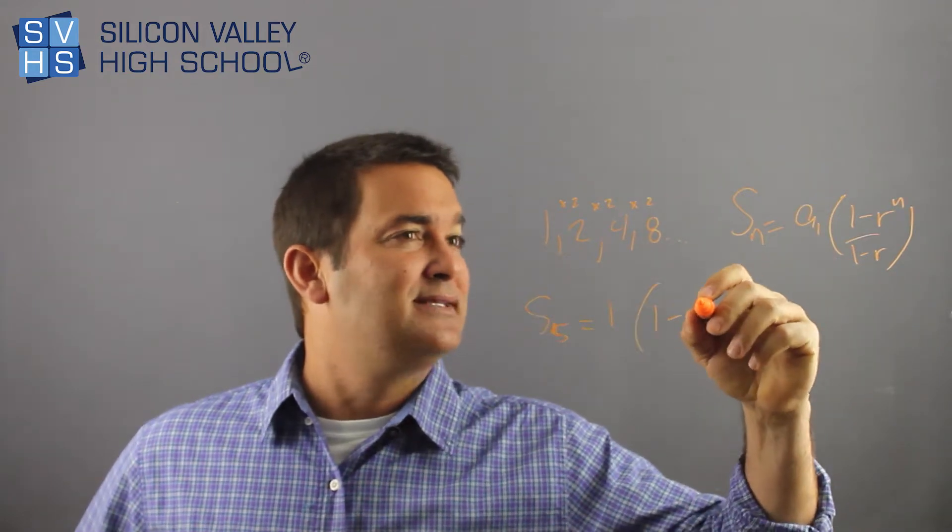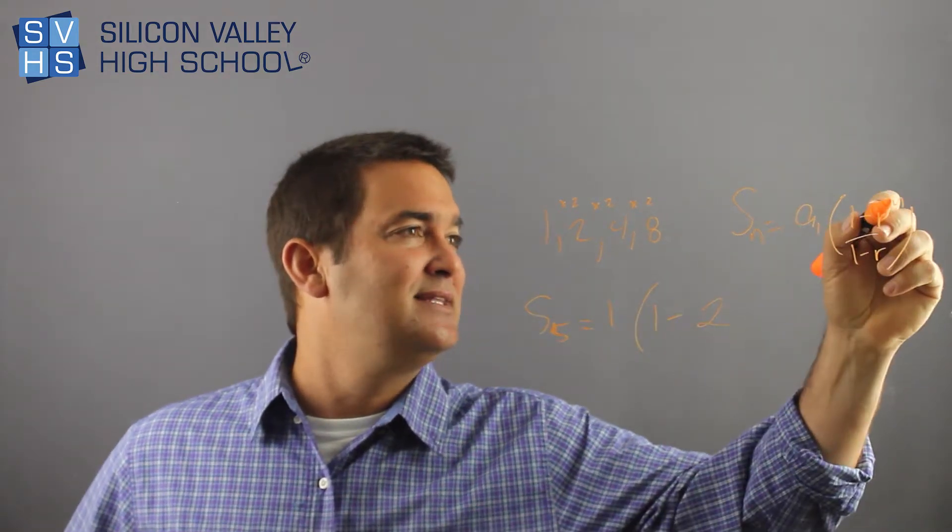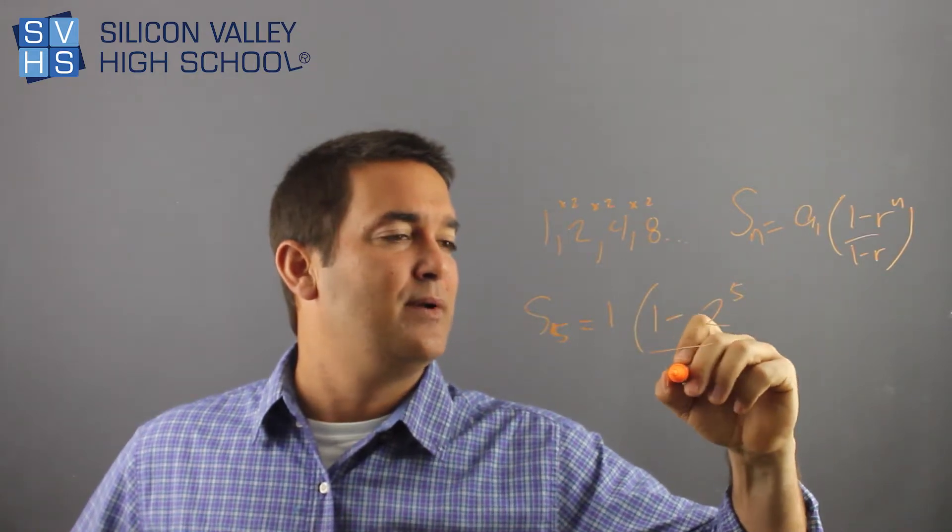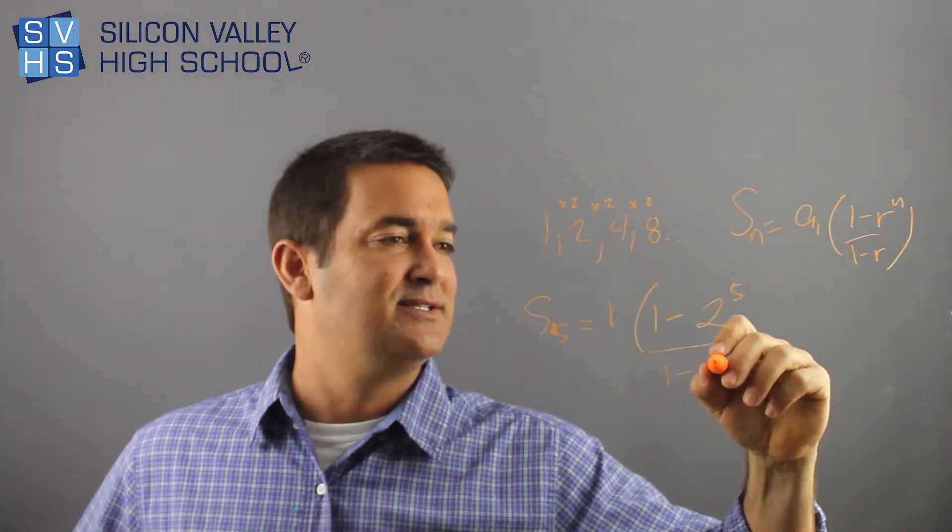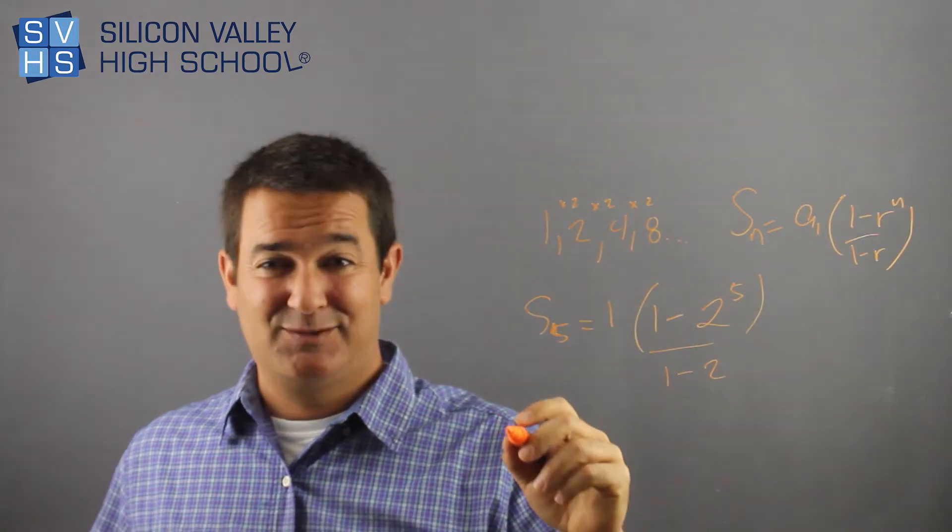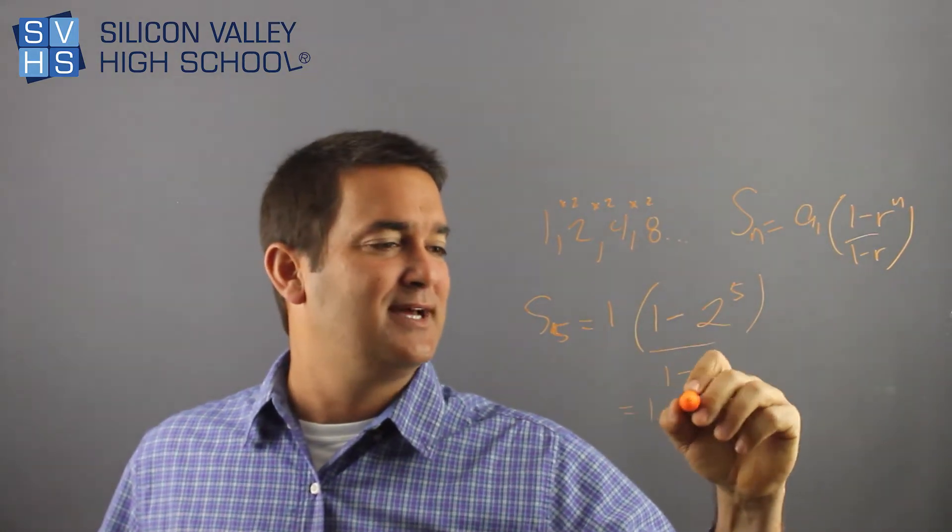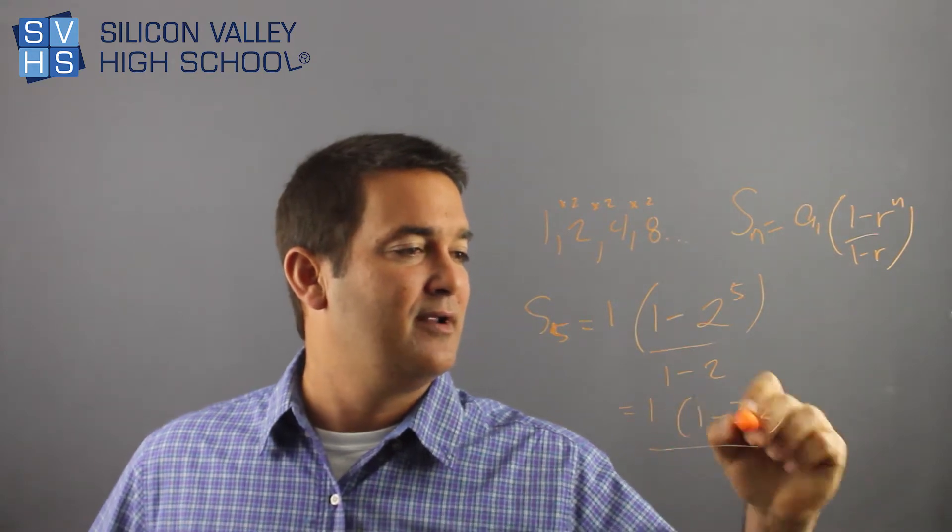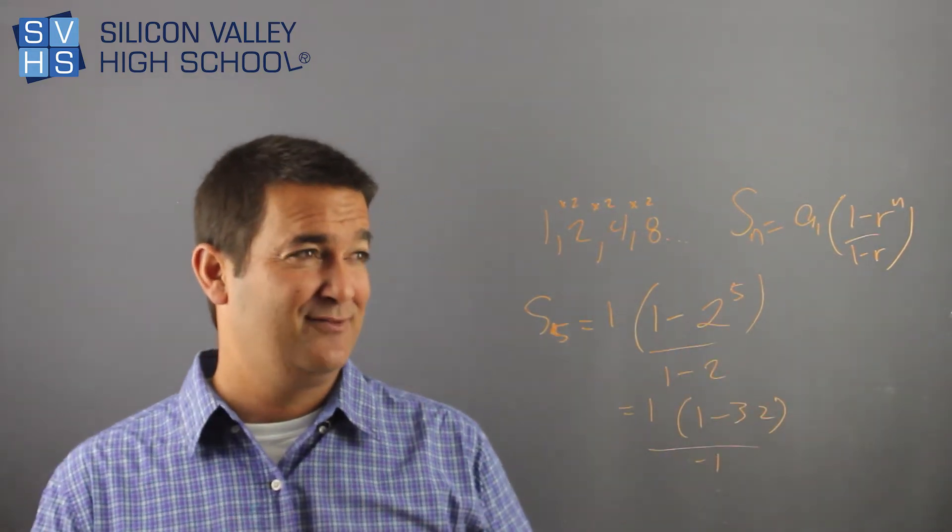But anyways, we have 1 minus r, again, is 2, raised to the n. n in this case is 5, over 1 minus, again, r is 2 down here. So now this gets weird. So now we have 1 times 1 minus, what's 2 to the fifth? 32 over negative 1. 1 minus 2 is negative 1.